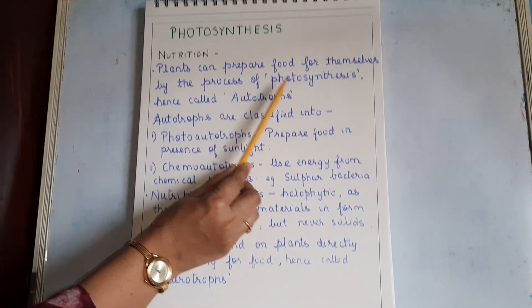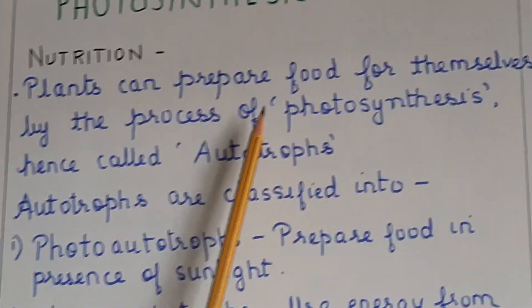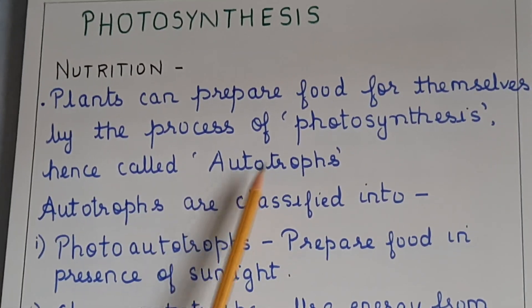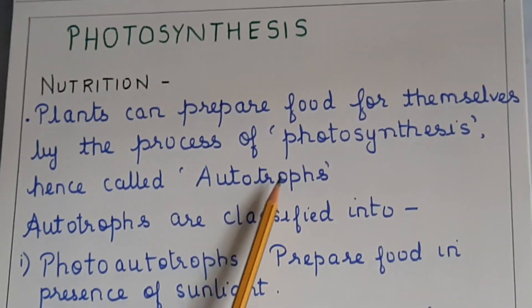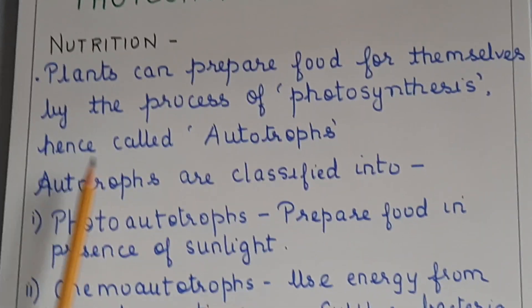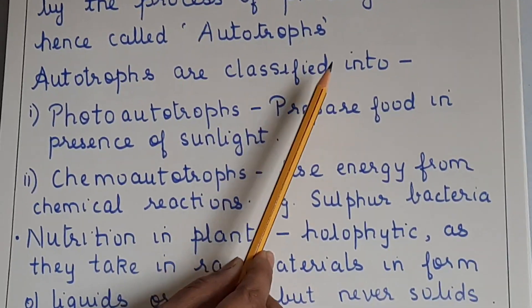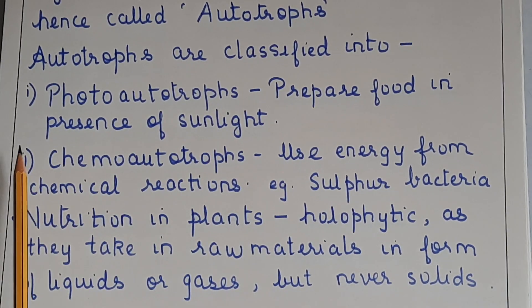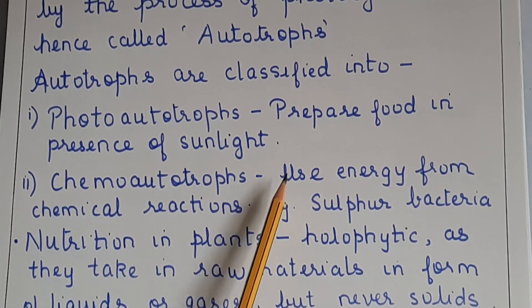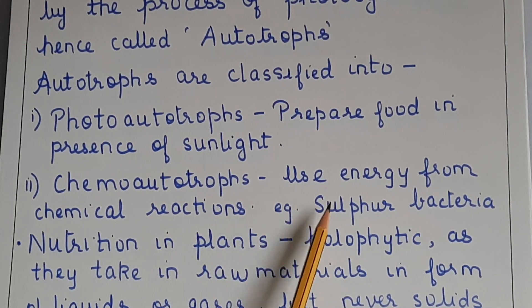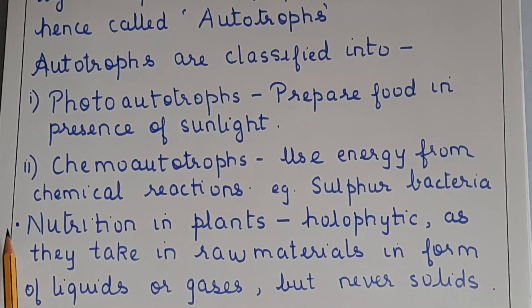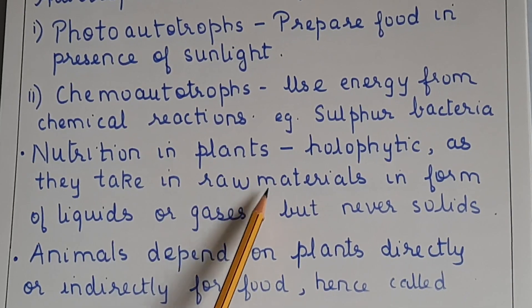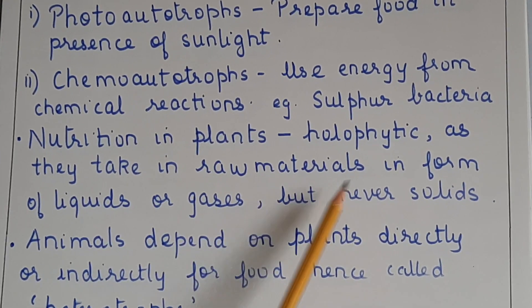Plants can prepare food for themselves by the process of photosynthesis, hence they are called as autotrophs. Auto means self and trough means nutrition. Autotrophs are further classified into photoautotrophs, that is they prepare food in presence of sunlight, and chemoautotrophs, that is they use energy from chemical reactions like sulphur bacteria. Nutrition in plants is holophytic as they take in raw materials in form of liquids or gases but never solids.